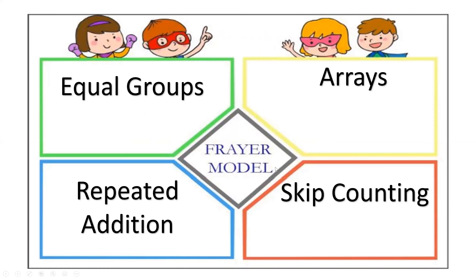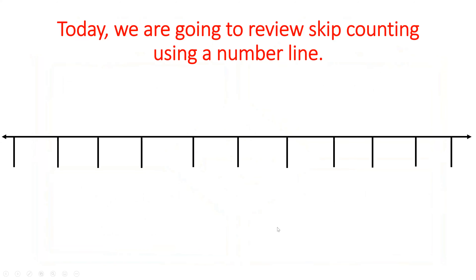Today we are going to talk about all the different ways we've been learning how to multiply. We've been talking a lot about equal groups, and we've been learning a lot about arrays. We also learned a lot about repeated addition. Today we are going to focus on skip counting.